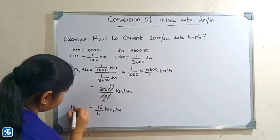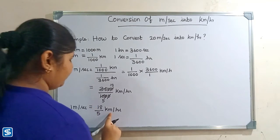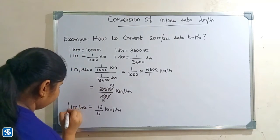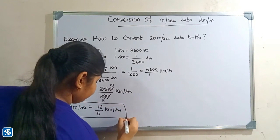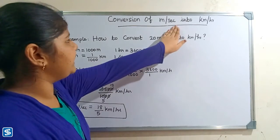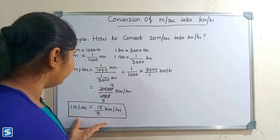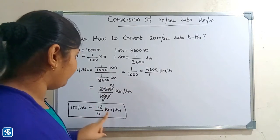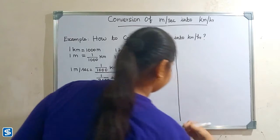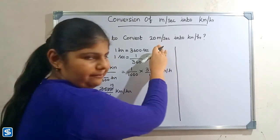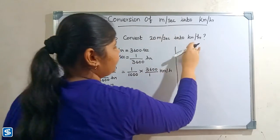So 1 meter per second is equal to 18 by 5 kilometer per hour. Now we will see how to solve our example. Our example is we have to convert 20 meter per second into kilometer per hour.